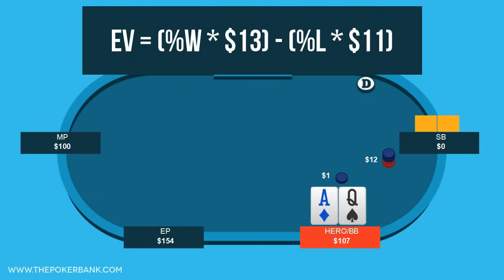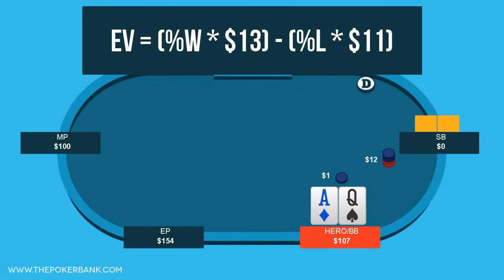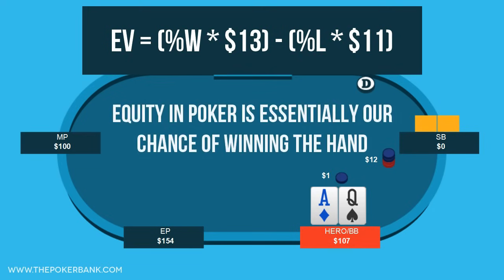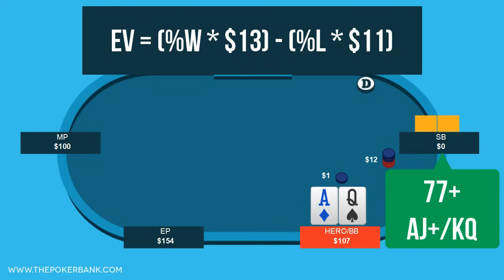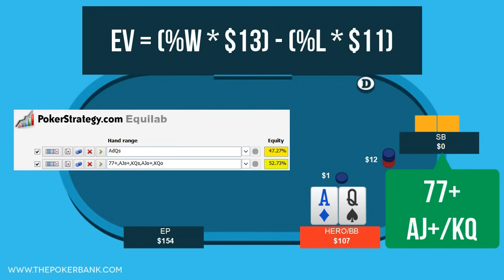The last things we need are %W and %L. In the coin flip example we knew the coin had a 50-50 chance, but in a poker hand we use an equity calculator to figure out our equity — our estimated chance of winning against our opponent's range of hands. For simplicity, let's assume the small blind would shove sevens-plus, ace-jack-plus, and king-queen. I would normally assign a wider range, but let's use that for now. Plugging that into an equity calculator like Equilab, we see that our ace-queen has 47% equity.